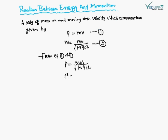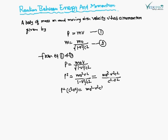Squaring both sides: p² = m₀²v² / (1 - v²/c²). The equation becomes p²(c² - v²) = m₀²v²c², so multiplying through, p²c² - p²v² = m₀²c²v².